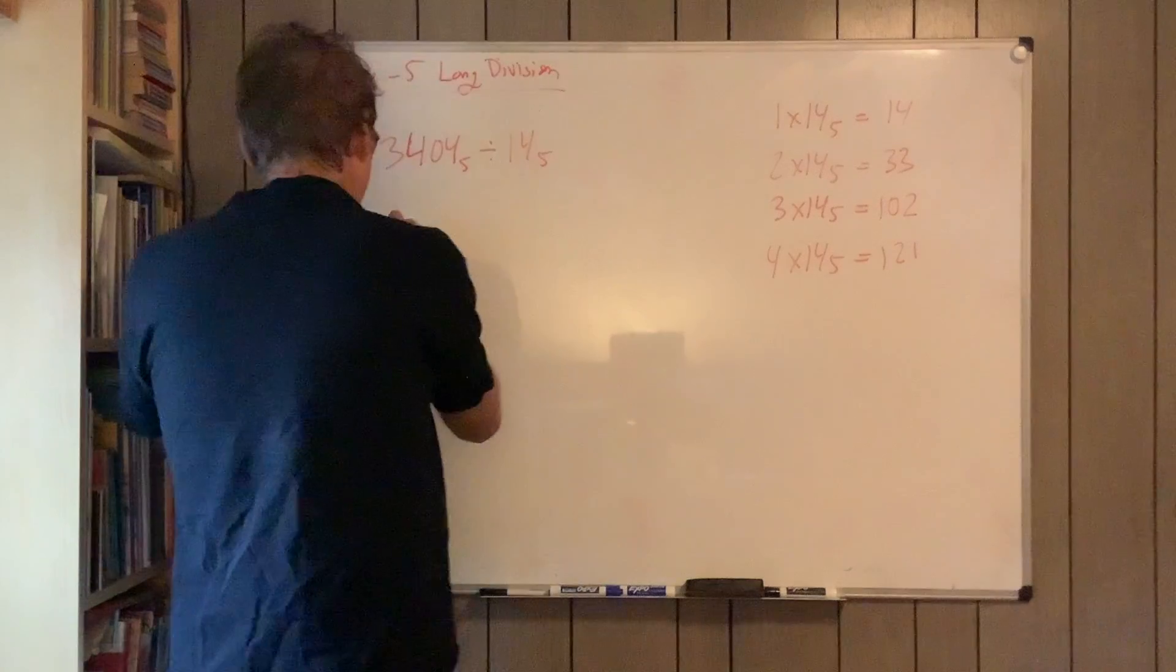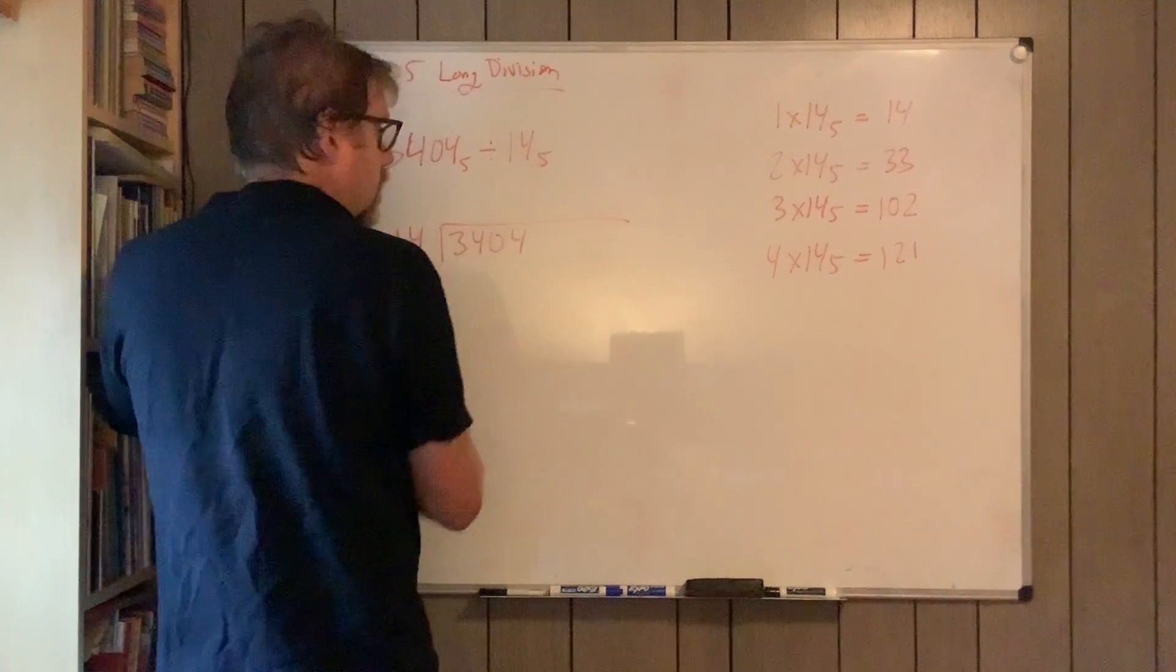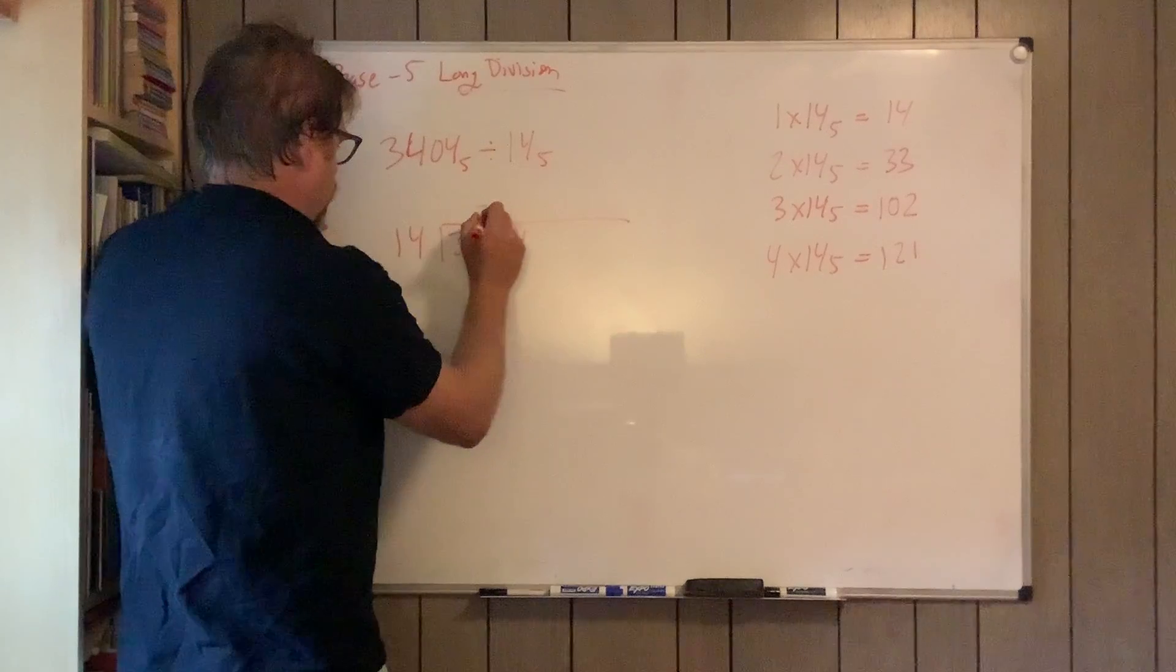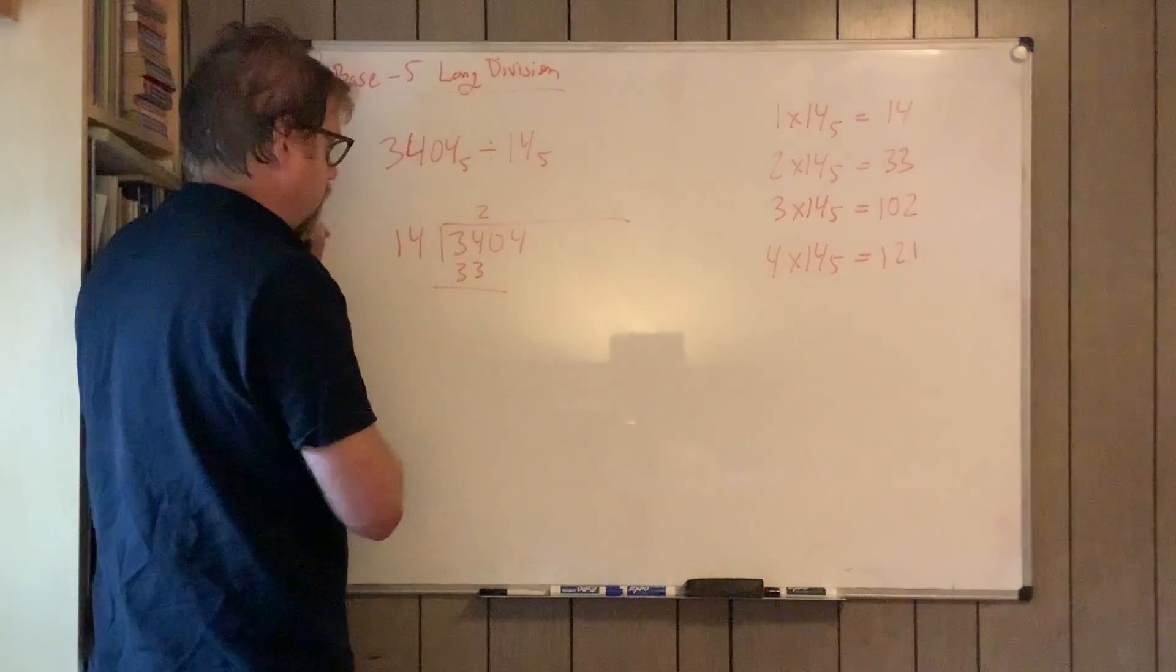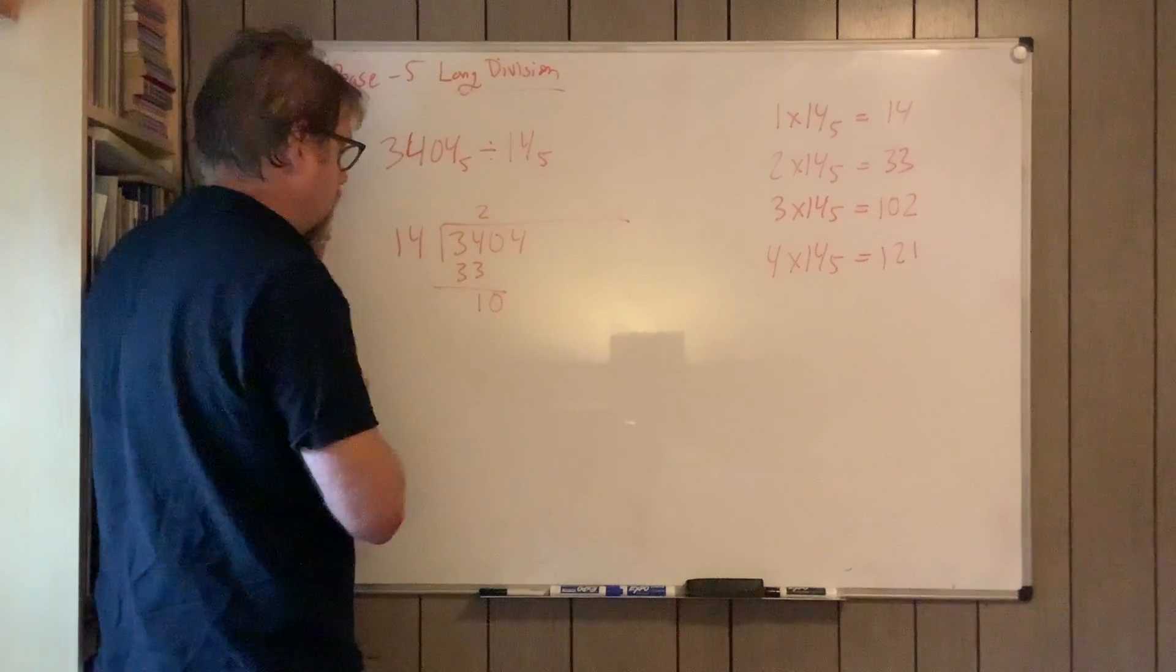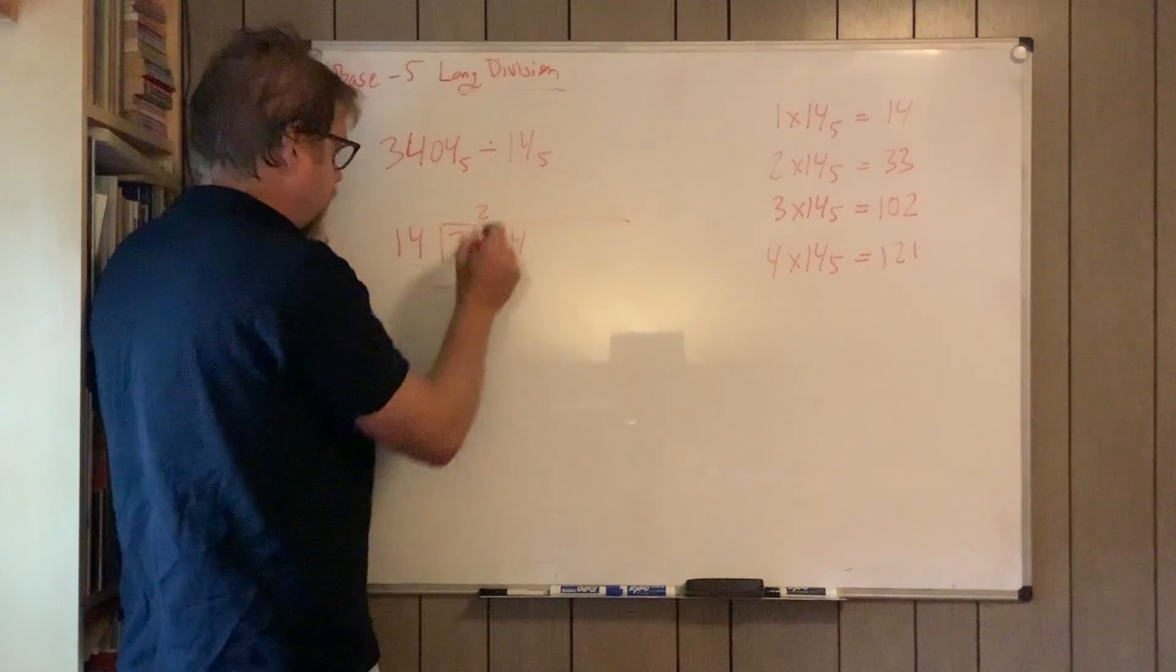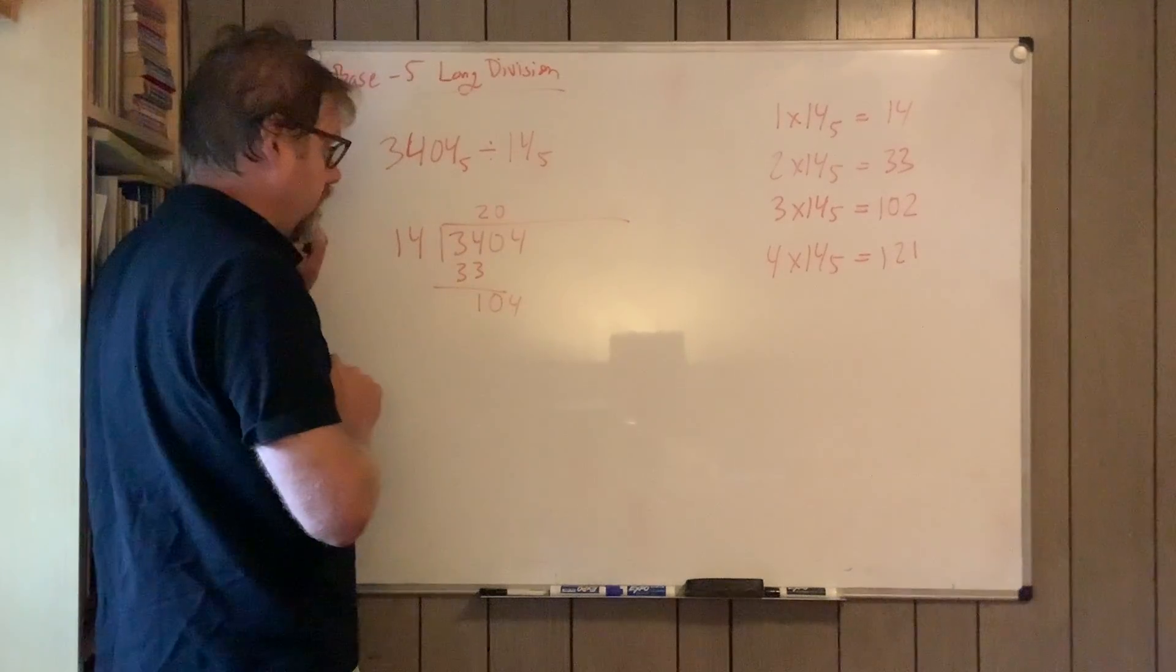Now let's do 3404. I'm going to scan. I hit 2, makes 33, and subtract. Bring down the zero. So 14 doesn't go into 10, so that's just 0, and I'm bringing down the 4.